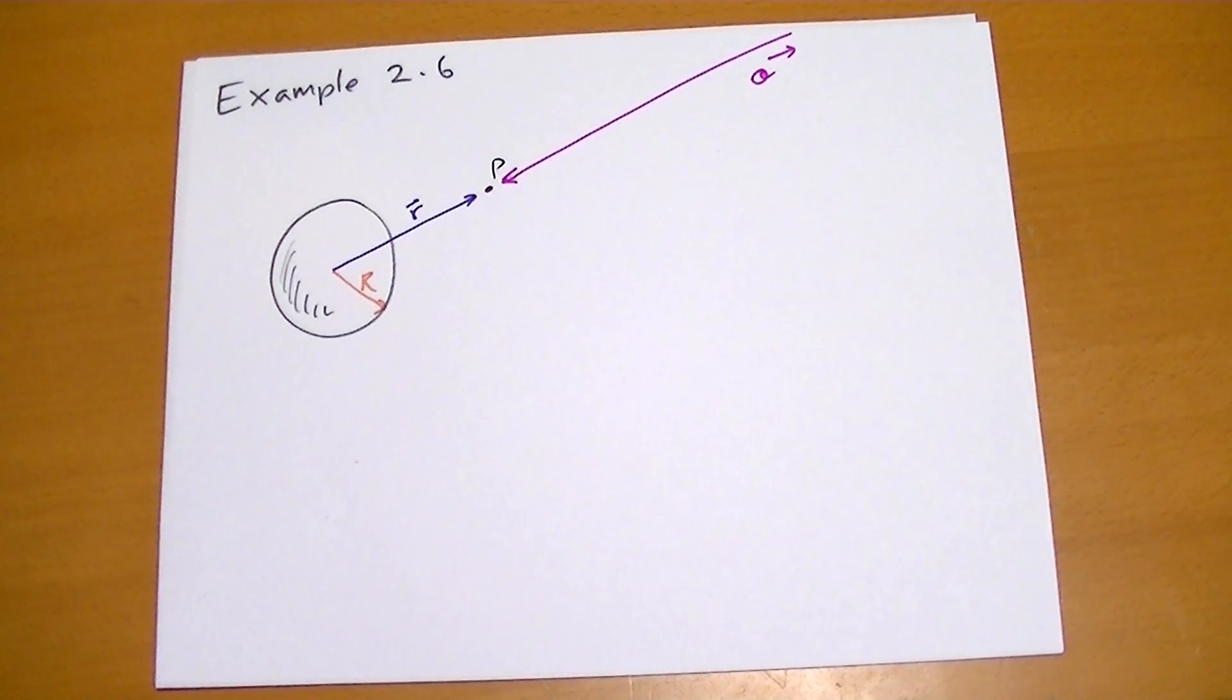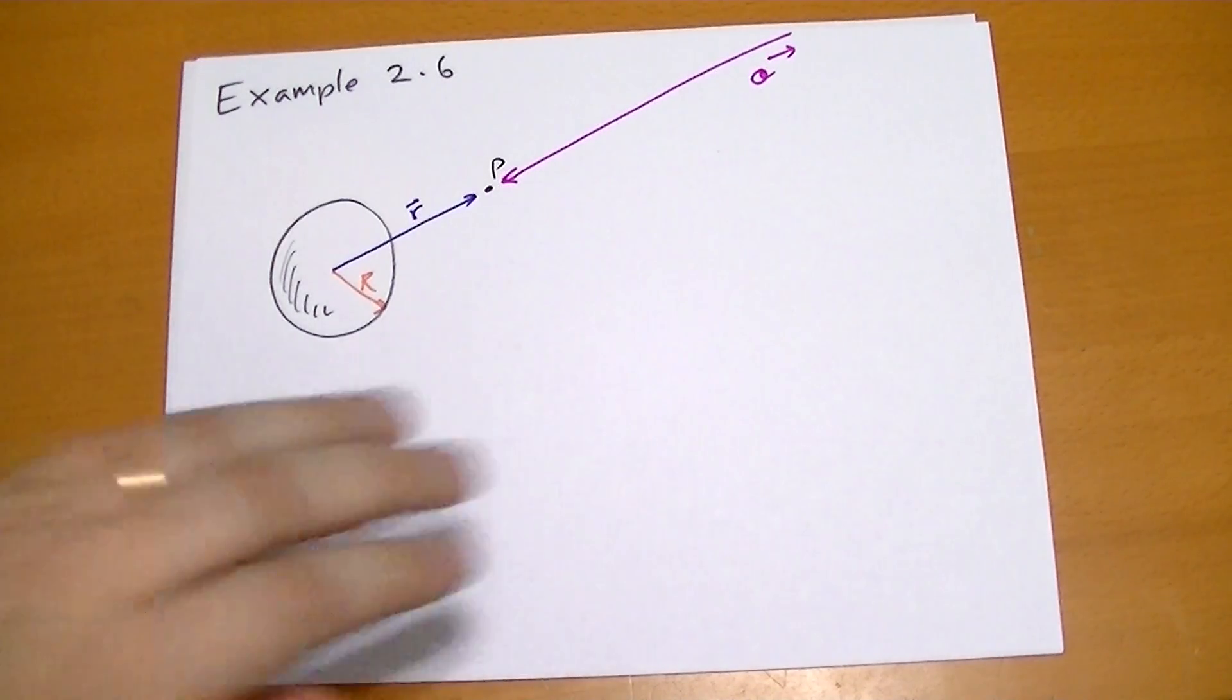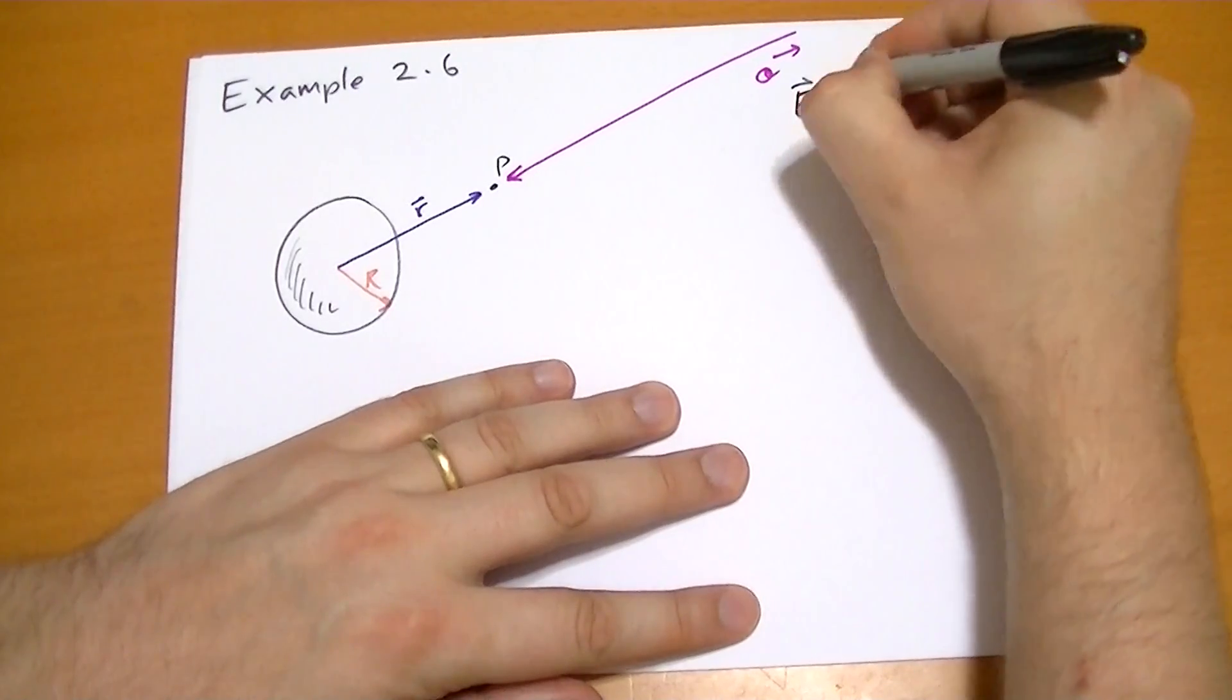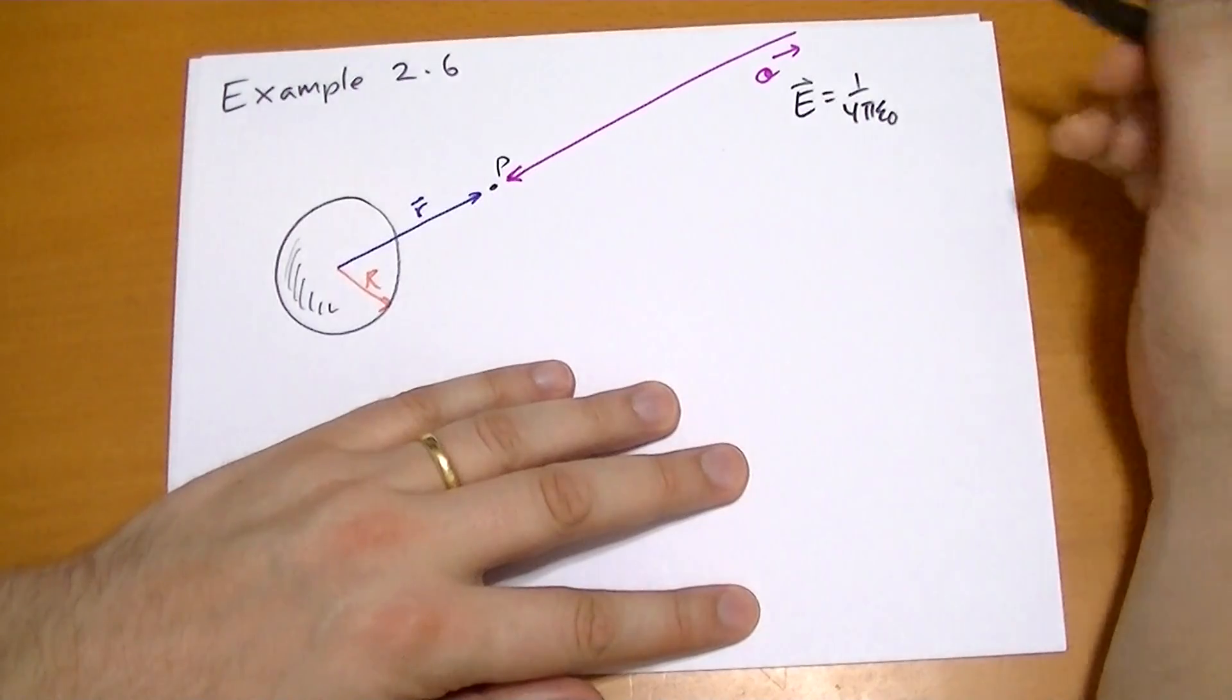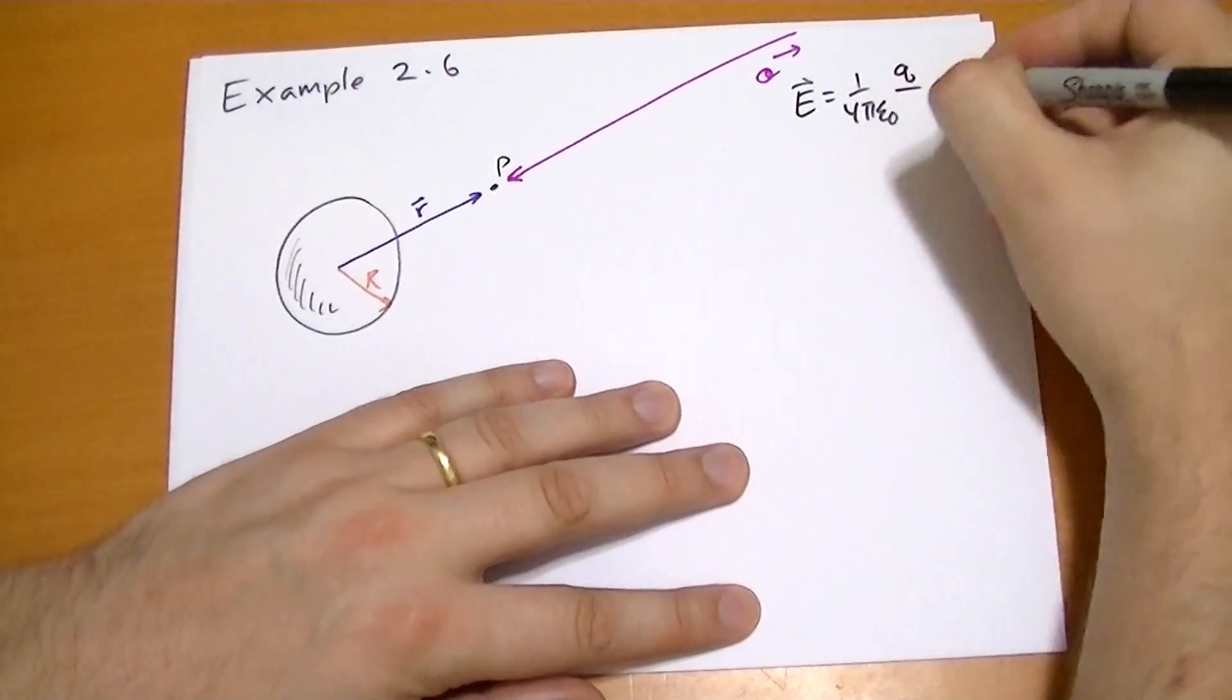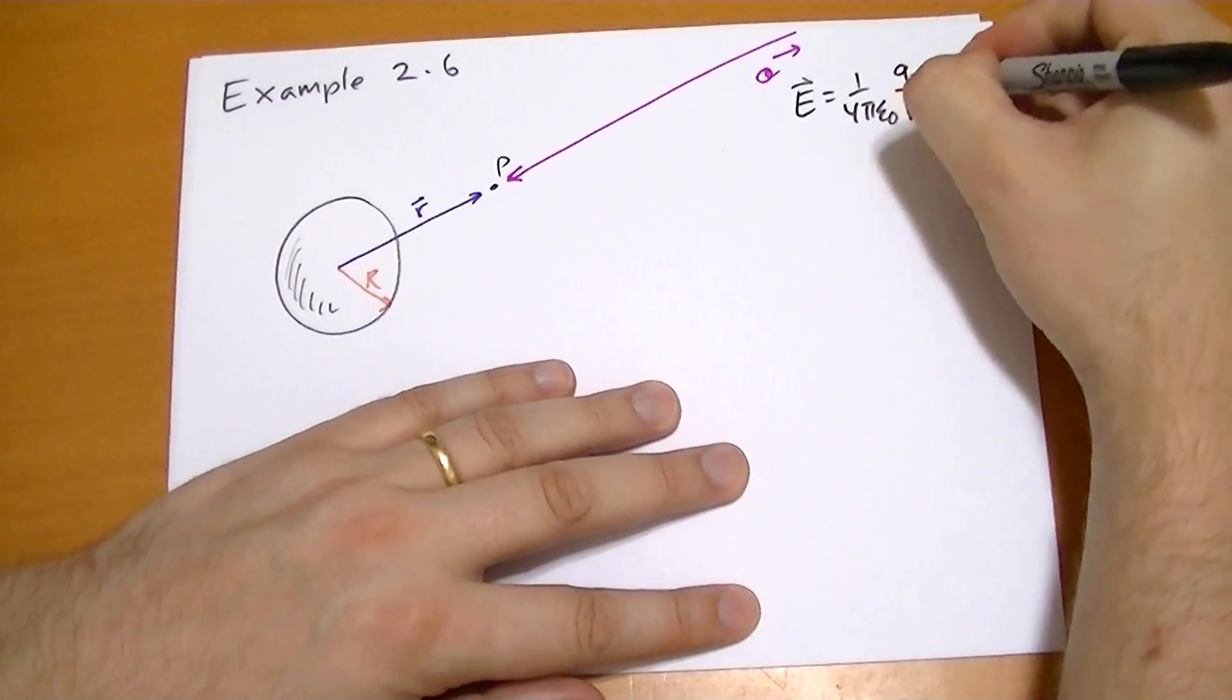So the easiest way to solve this problem is to just solve the integral. So we have the electric field here, which is 1 over 4 pi epsilon naught q over r squared in the r hat direction.